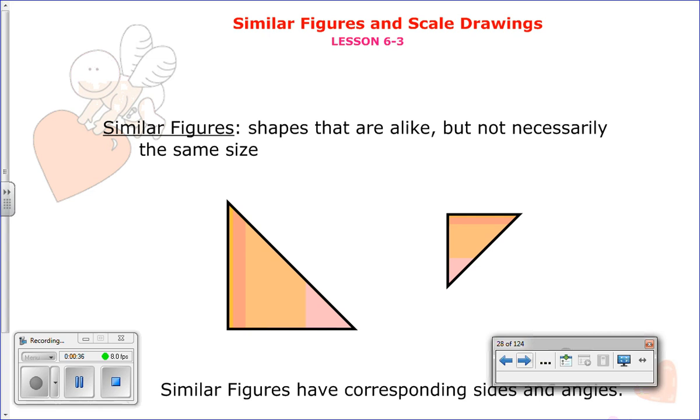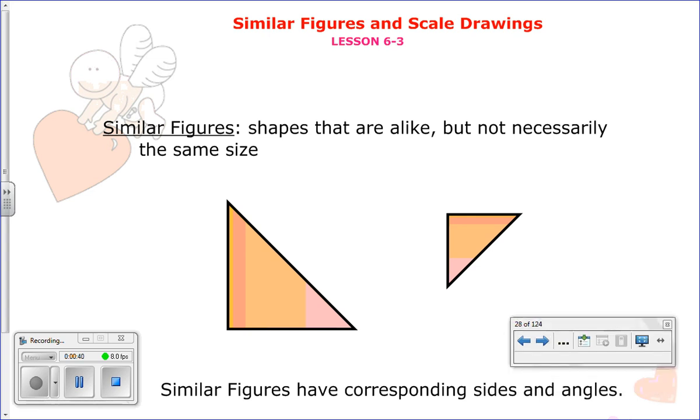So first, a couple definitions. Here is similar figures. When we talk about similar figures, they are the same shapes. So the shapes are alike, but they're not necessarily the same size. So here, for example, I have two similar figures. They're two right triangles. However, they're not the same size. One is greater than the other.